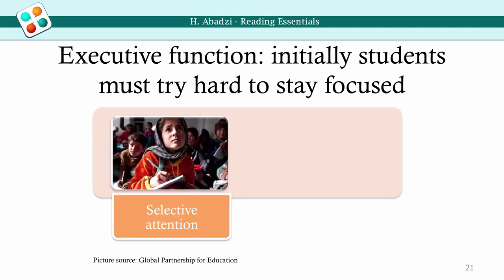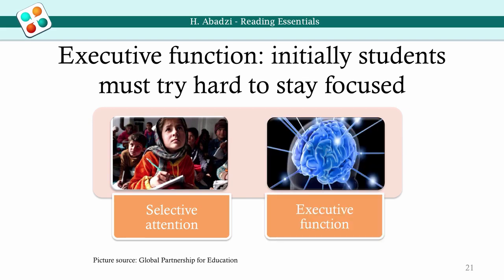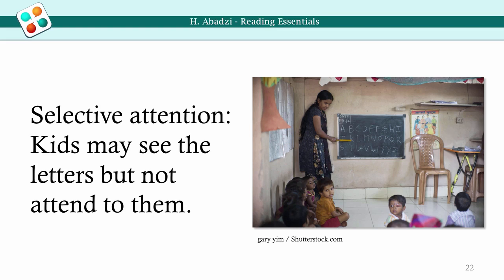Reading requires the ability to focus on relevant information, maintain selective attention, and persist despite difficulties. This is called executive function — the ability to self-regulate. This ability develops a lot in ages 3 to 6. Children who are poor are often neurologically immature and may have trouble maintaining attention to pertinent information. Low-income children with delays in executive function may specifically have trouble focusing on specific letters on a blackboard. Children memorize easily, so they may repeat what is written on the blackboard but without looking at the correct letters, and teachers may not check whether everyone has learned them.